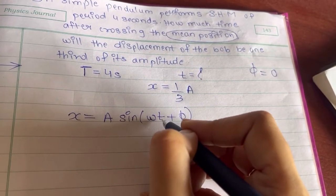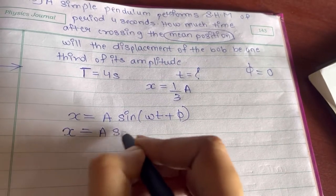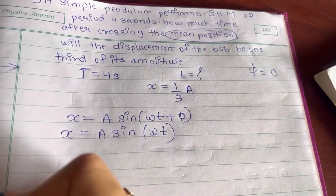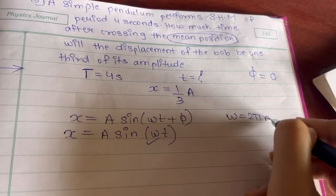Here we know that phi is 0. So the formula is A sin omega t. Now here we don't have the value of omega. Omega is nothing but 2 pi n.